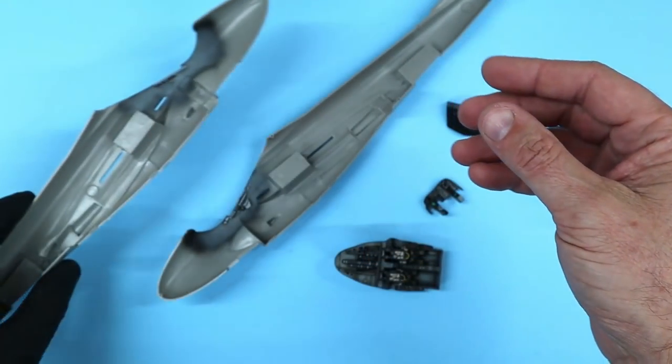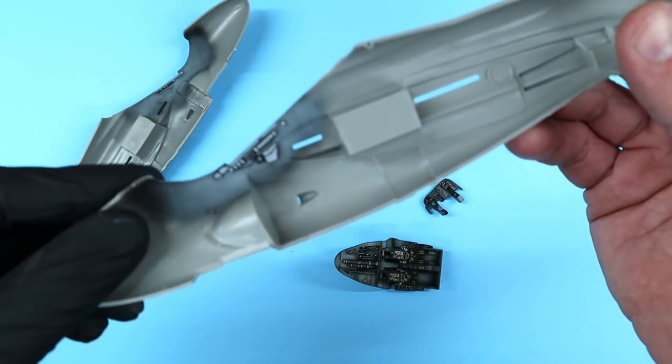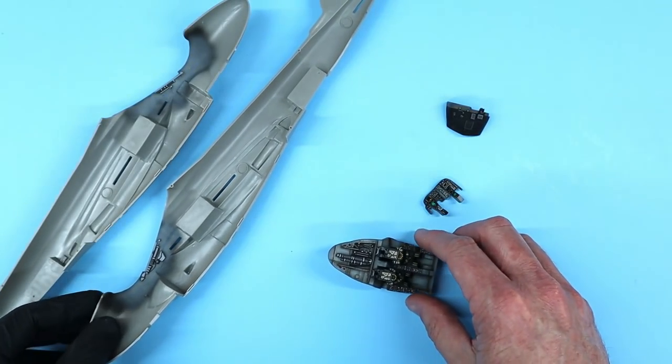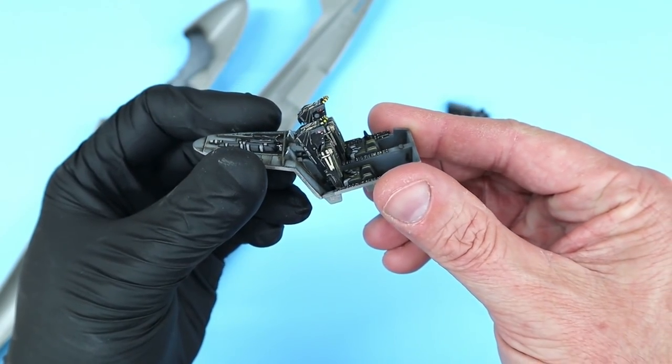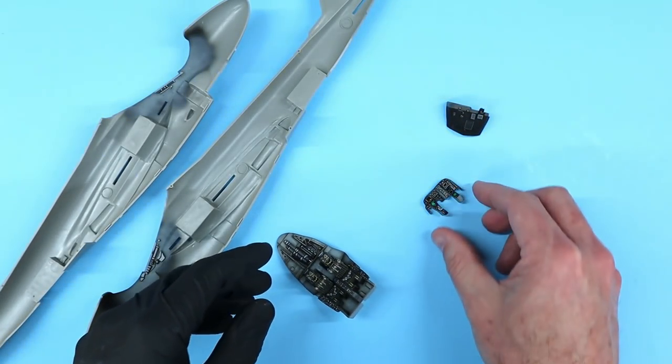With all of the cockpit components painted, I was ready to get them installed into the fuselage and close everything up. Here's a quick look at each of the kit cockpit components before they were installed into the fuselage.